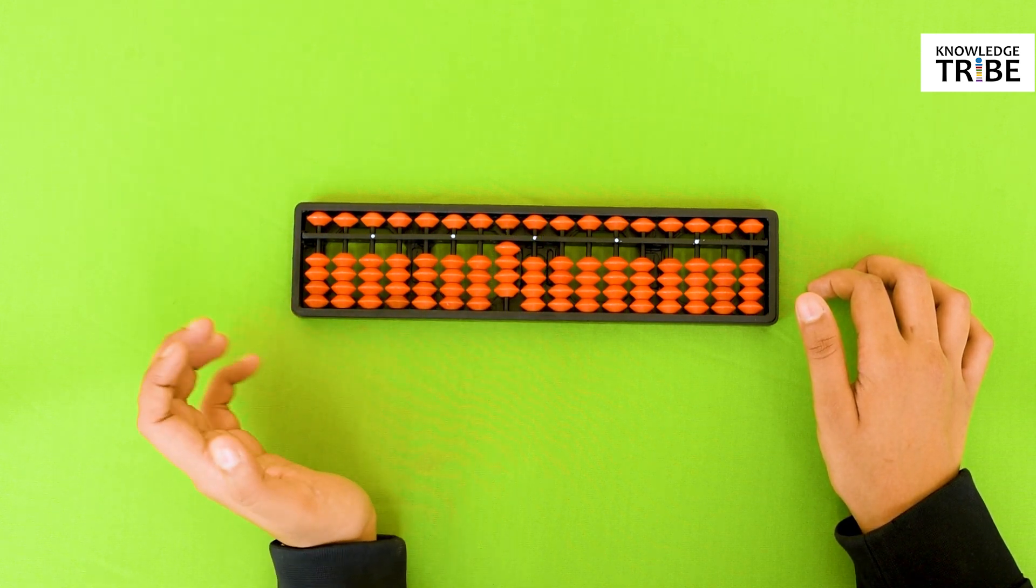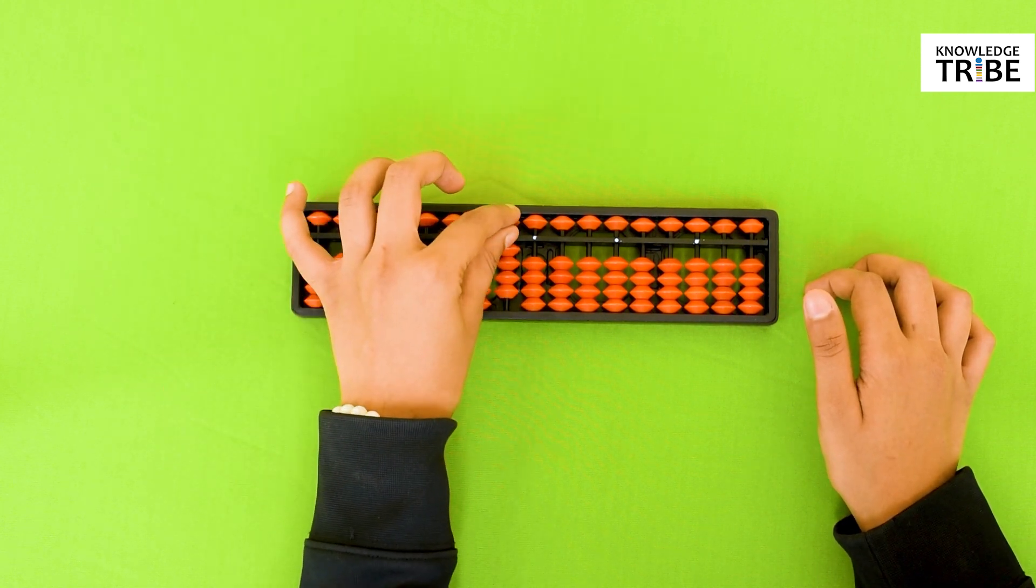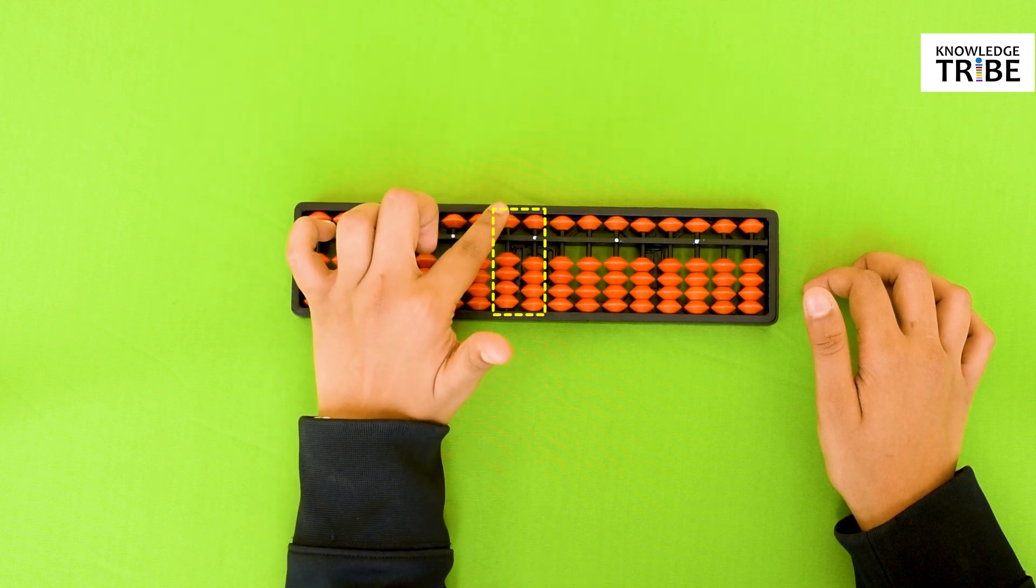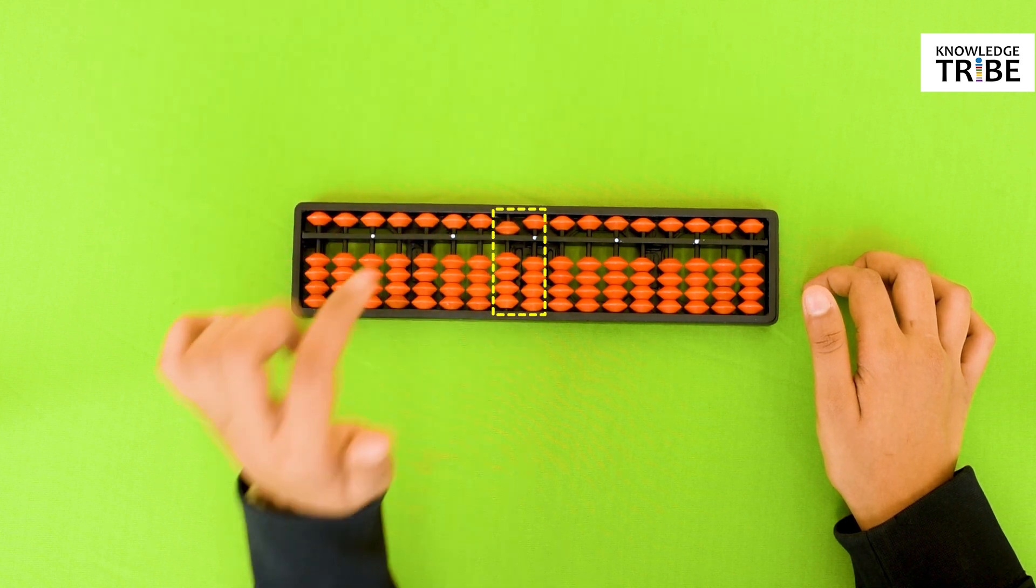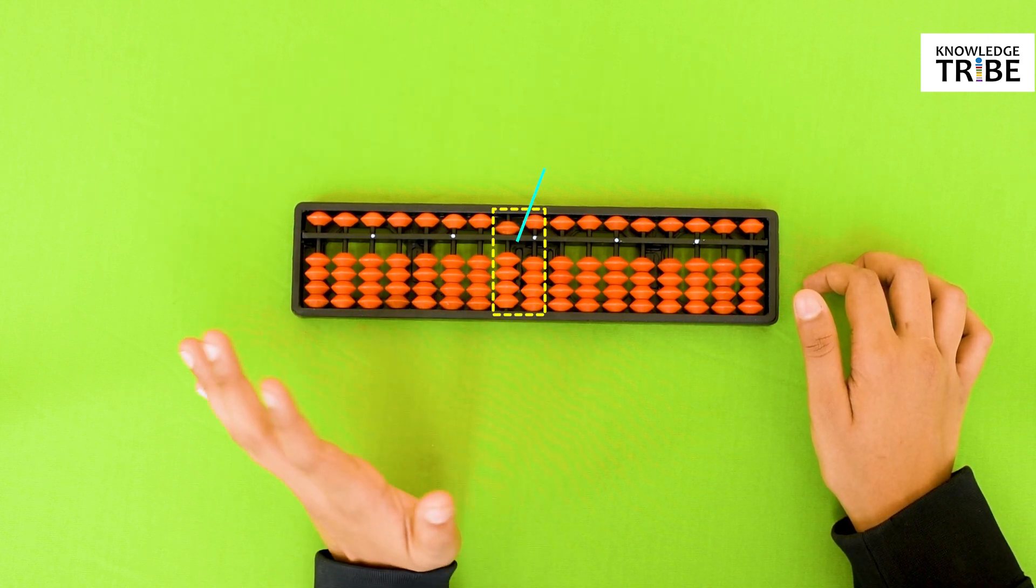How will we write 50 then? Exactly. Reset the abacus to default mode and move the heavenly beads of the second column. 5 and 0. This is how we count 50 on an abacus.